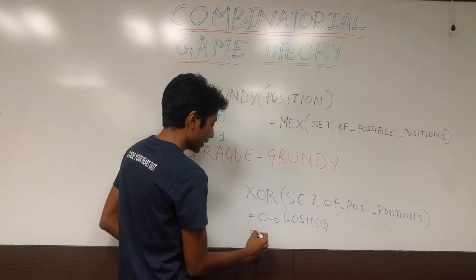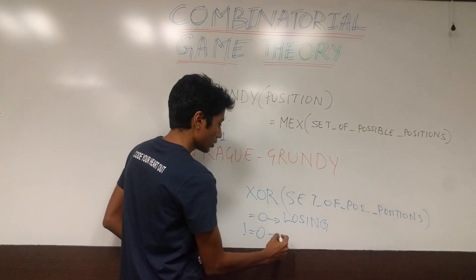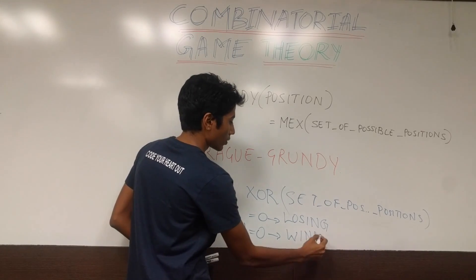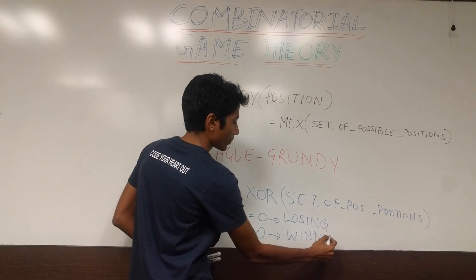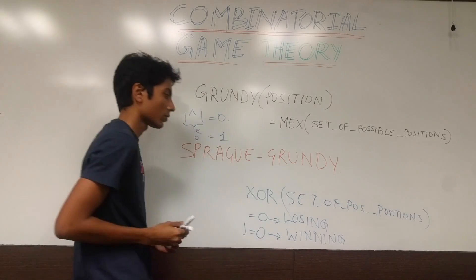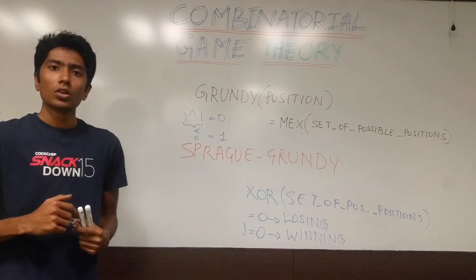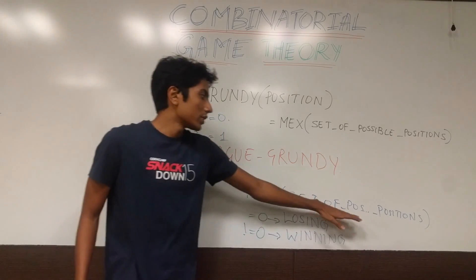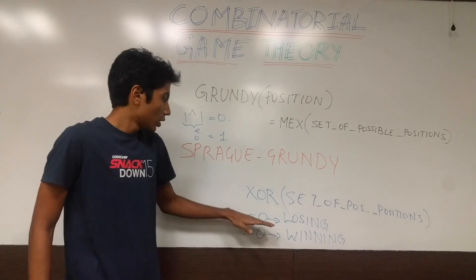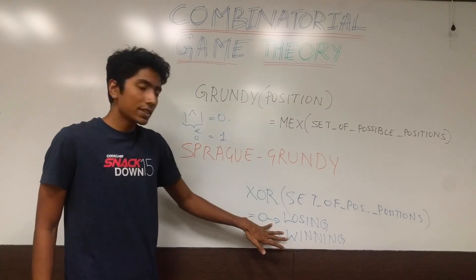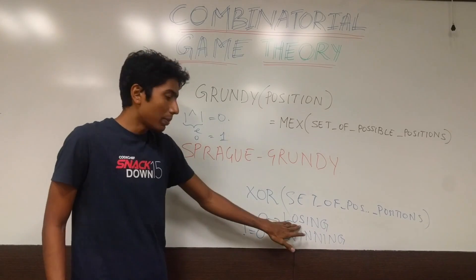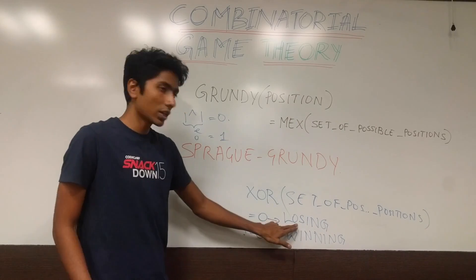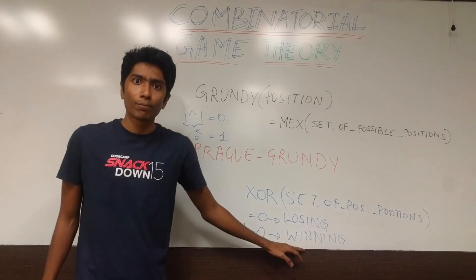And if the XOR is not 0, that means you are winning. So from any given position, if you take the XOR of the set of possible positions, and you get 0, then the player whose turn it is right now is losing. Otherwise they are winning.